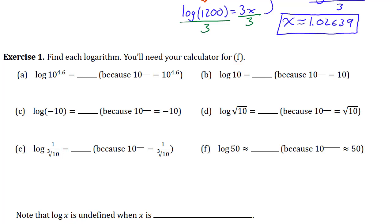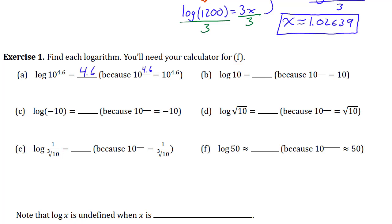We want to know: what is log of 10 to the power 4.6? The result of this logarithm is the exponent of 10 that results in 10 to the power 4.6. So what would you put here to make these the same? How about 4.6? So this is just 4.6. In other words, this is asking what is the exponent of 10 that is the same as 10 to the power 4.6? The answer is just 4.6.